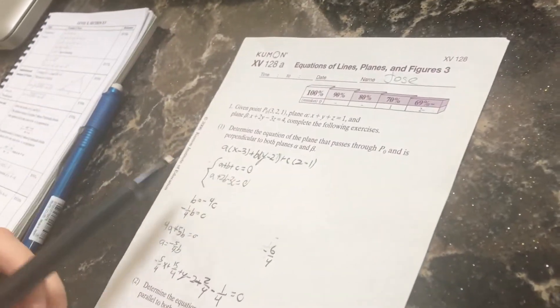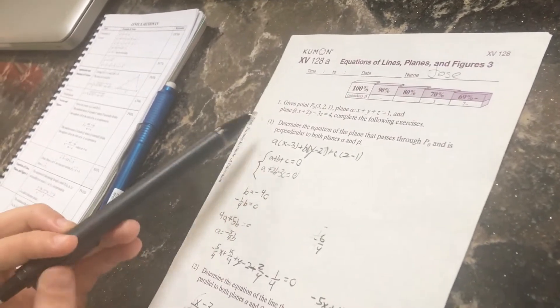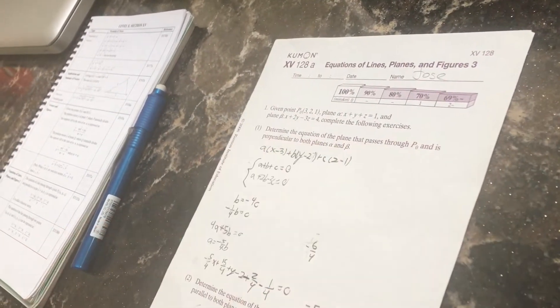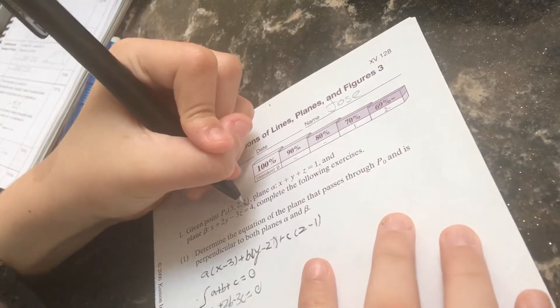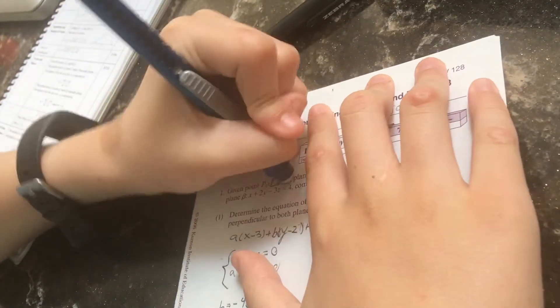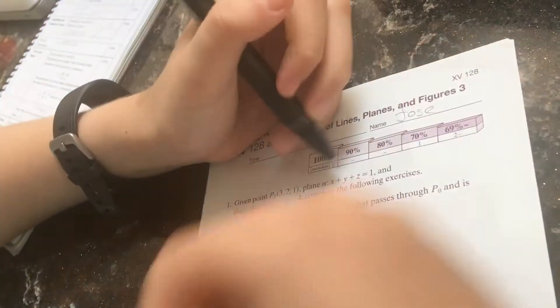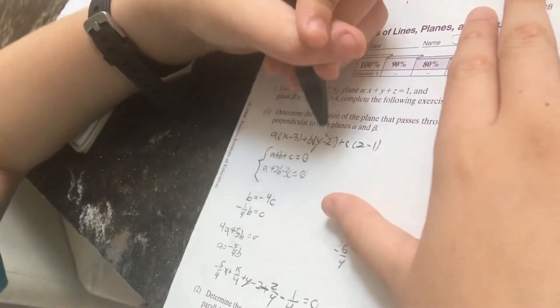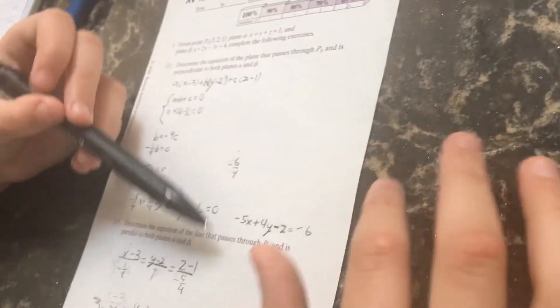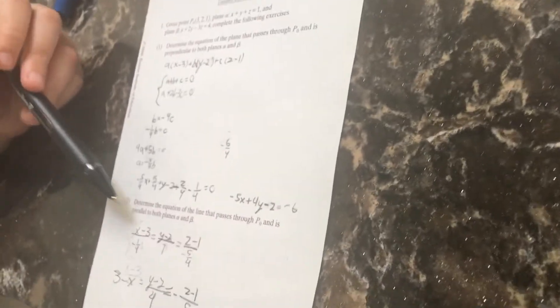For example, we have here a point in three-dimensional space described by three coordinates, 3, 2, and 1. Now, imagine two planes, plane alpha and plane beta. We've got to complete these two examples. Determine the equation of the plane that passes through point P naught and is perpendicular to both planes A and B. Determine the equation of the line that passes through P naught and is parallel to both planes.